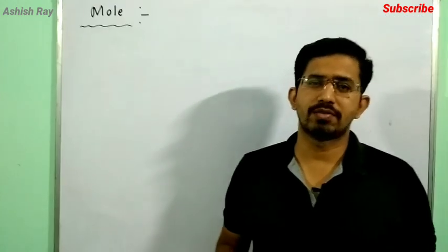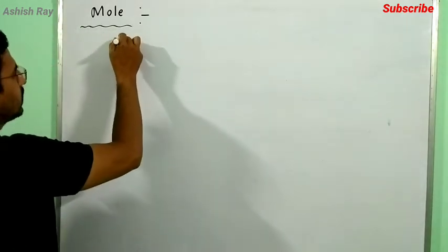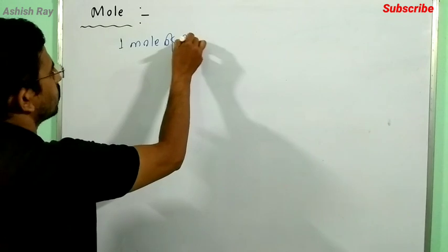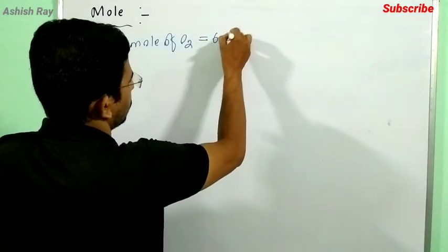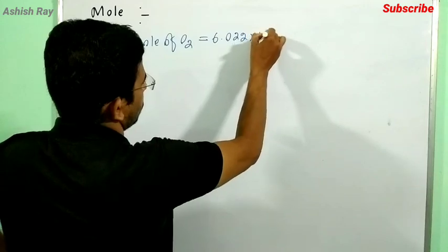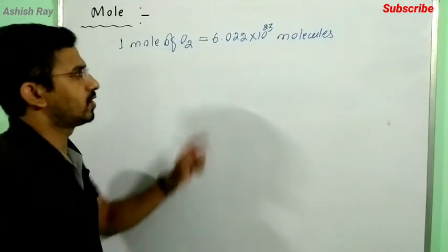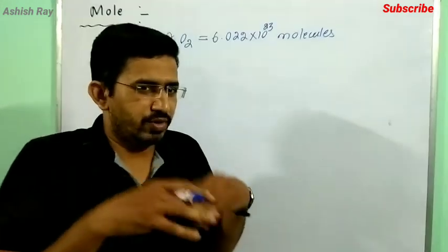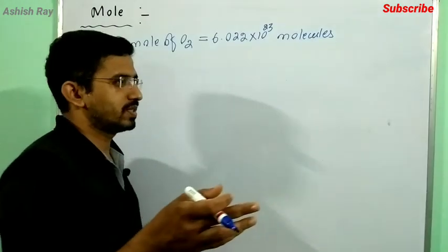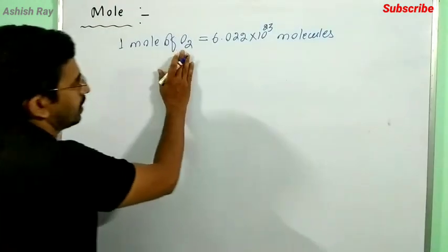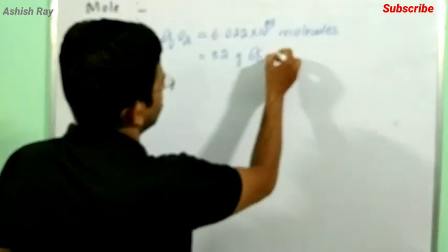Now, let's express one mole of O2 in different forms. One mole of O2 equals 6.022 into 10 to the power 23 molecules. It also equals one gram molecule, and the molecular mass of O2 is 32, so it contains 32 grams of oxygen.